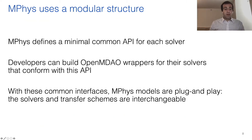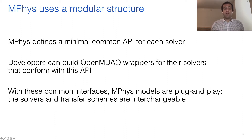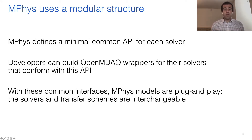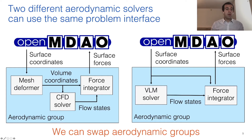mPhys uses a modular structure and defines a minimal common API for each solver. Developers can build OpenMDAO wrappers for their solvers that conform with this API. With these common interfaces, mPhys models become plug-and-play — the solvers and transfer schemes become interchangeable. To give you an example, we're going to look at two different aerodynamic solvers that use the same problem interface.